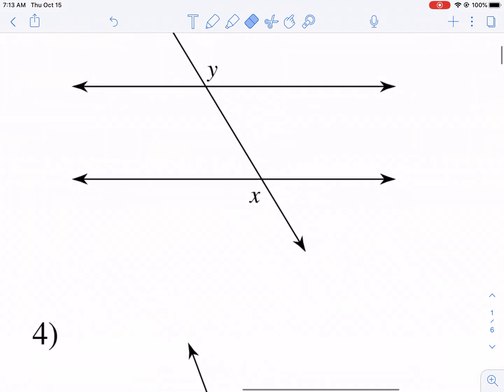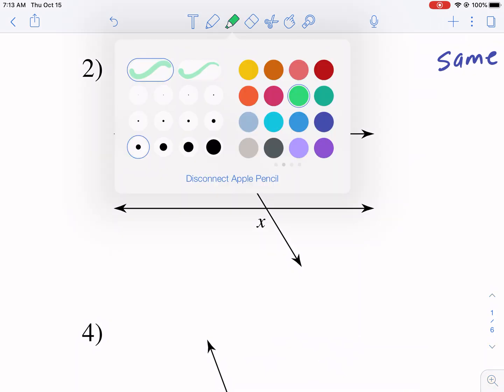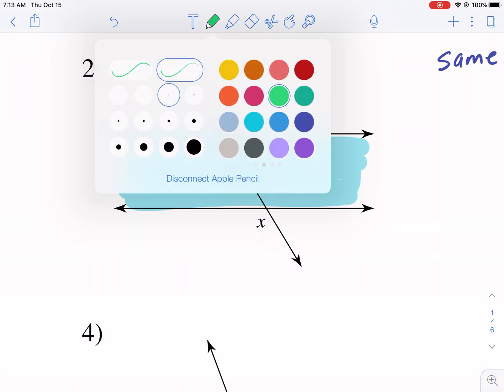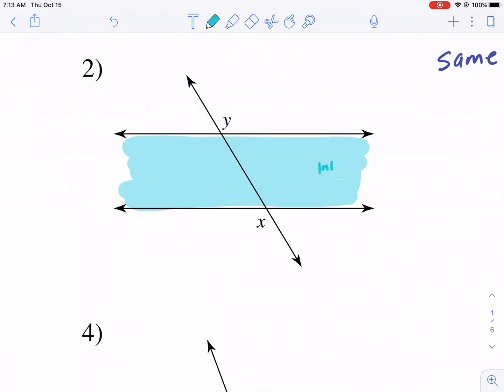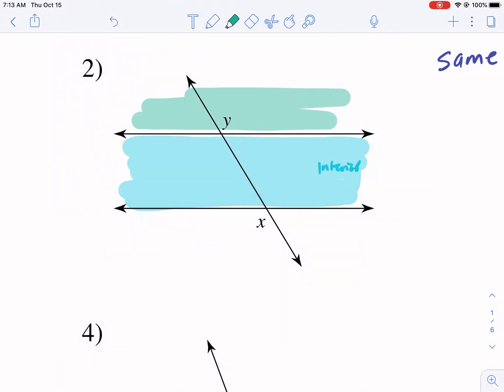They are equal. And as you can tell here, they're both acute angles, so they are exactly the same measure. Let's move on to number two. So number two, now we are in an area where we have to define the space. So this space in between the two parallel lines is inside. This is the interior space.